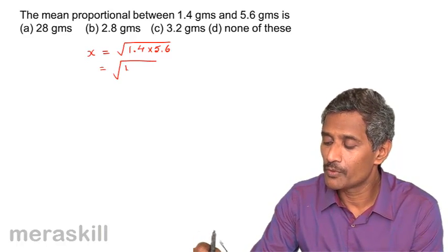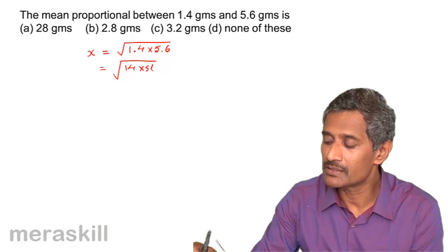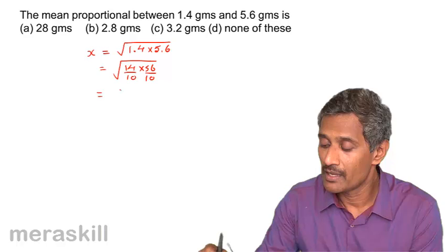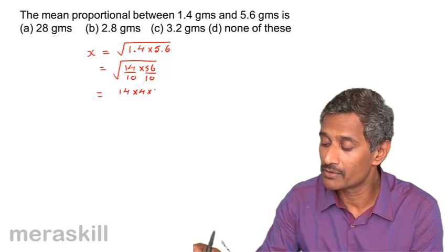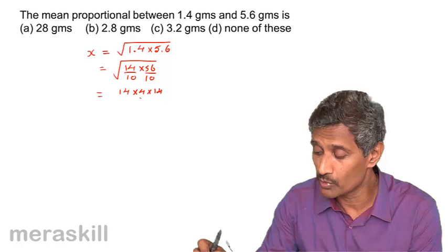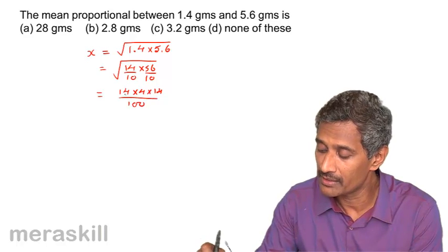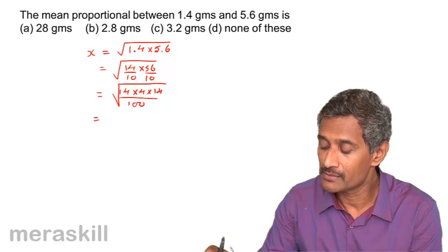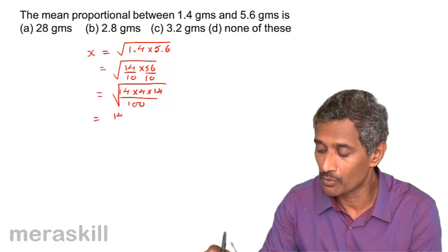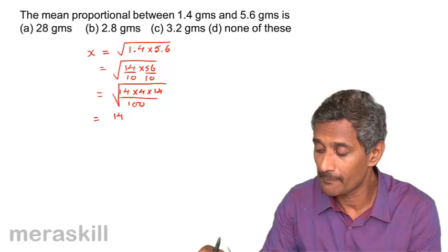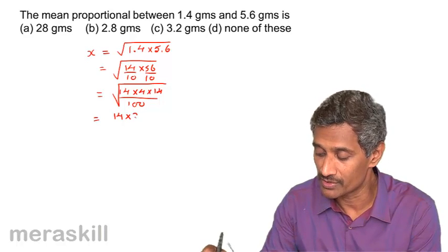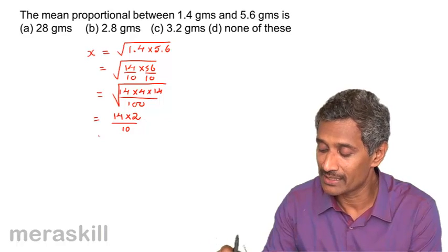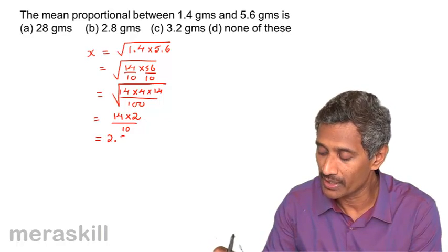We can write it as root 14 times 56 upon 10 upon 10. We can write this as 14 times 4 times 4 times 14 because 56 is 4 times 14 upon 100 and square root of this and hence 14 squared which is 14, square root of 4 which is 2, square root of 100 which is 10. So, it's 28 by 10 which is 2.8.